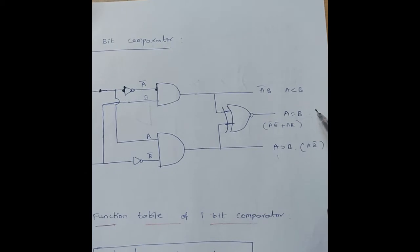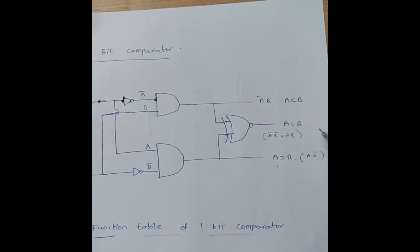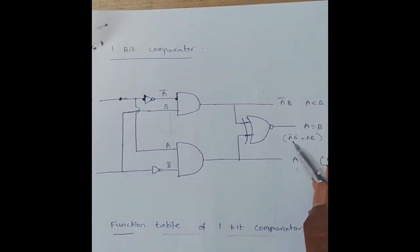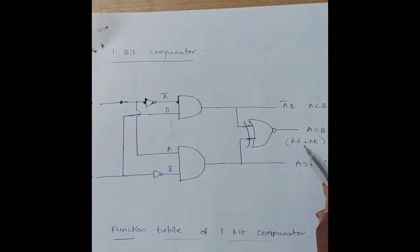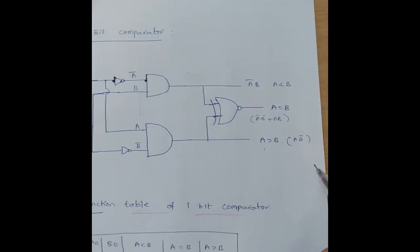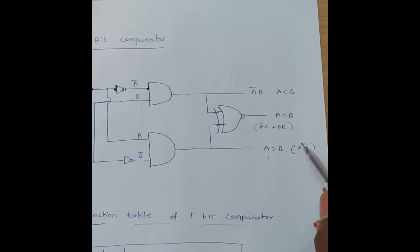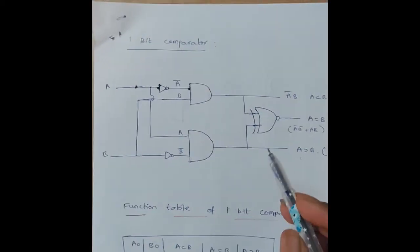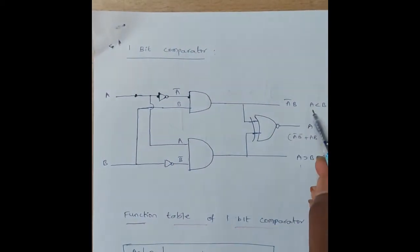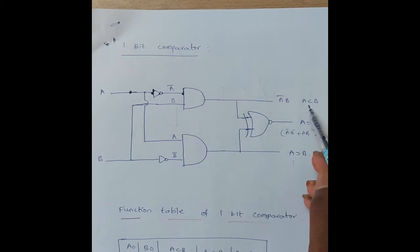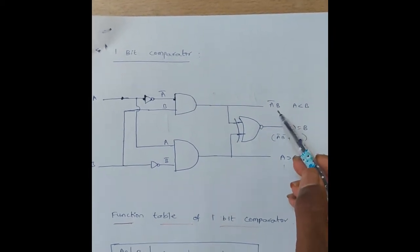The expression for A less than B is A-bar·B. The expression for A equal to B is A-bar·B-bar plus A·B. The expression for A greater than B is A·B-bar.